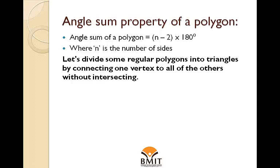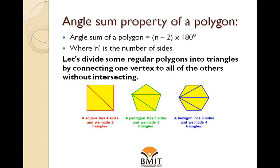Let's divide some regular polygons into triangles by connecting one vertex to all of the others without intersecting. A square has 4 sides and we made 2 triangles. A pentagon has 5 sides and we made 3 triangles. A hexagon has 6 sides and we made 4 triangles.